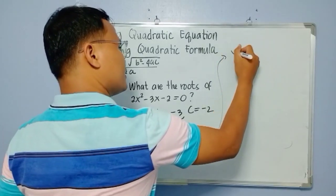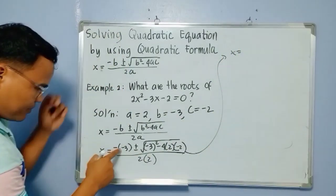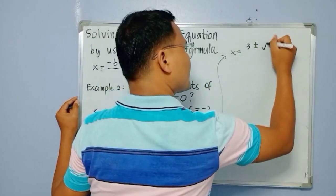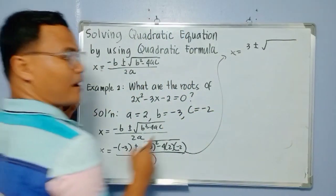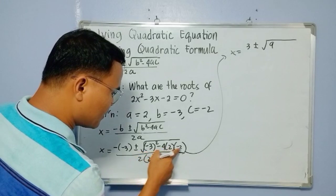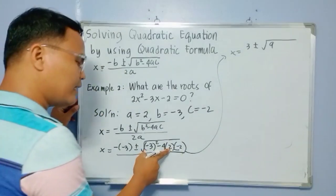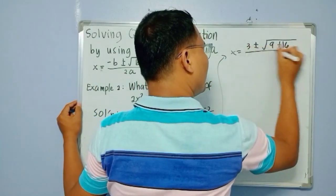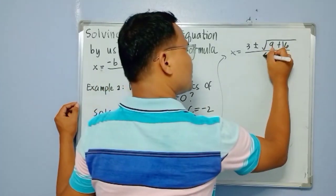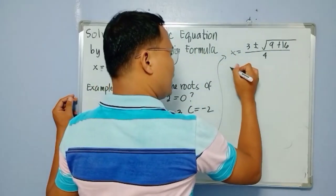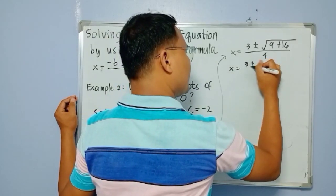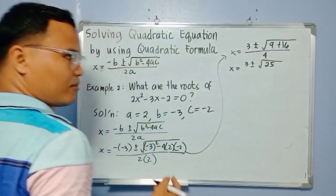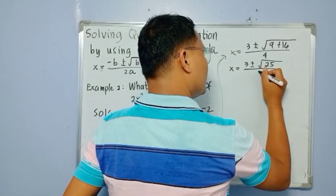Continuing: negative times negative is positive, so we have positive 3. Plus and minus the square root of: negative 3 squared is 9, then negative 4 times 2 is negative 8, times negative 2 is positive 16. So we have 9 plus 16 inside the square root, all over 2 times 2 which equals 4. That gives us x equals 3 plus and minus the square root of 25, all over 4.